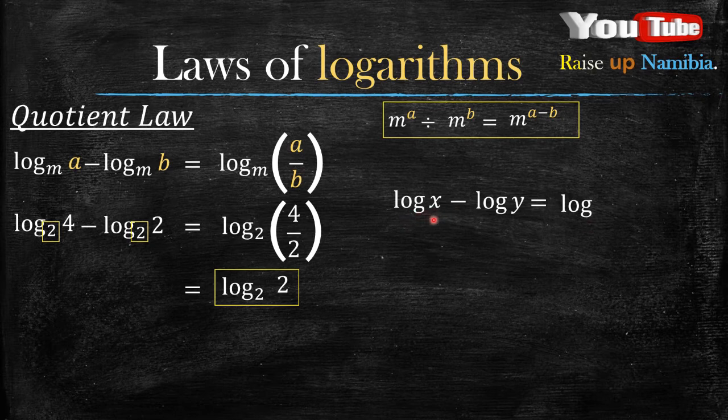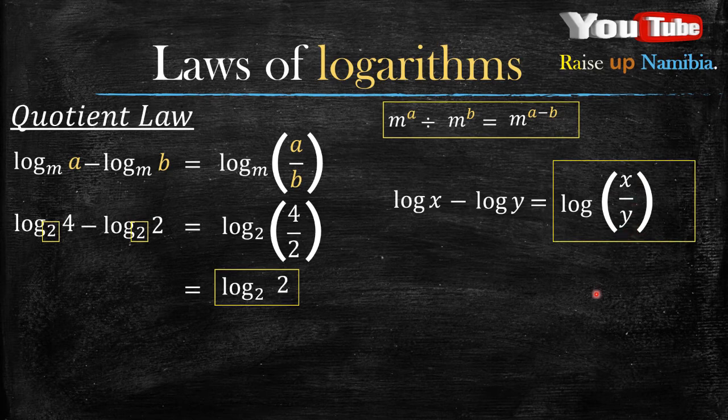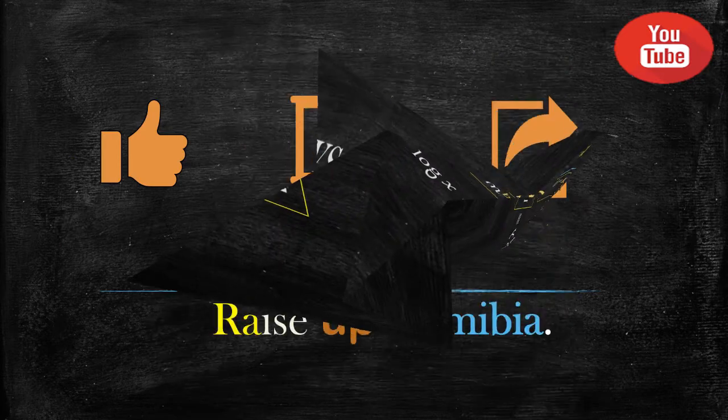They will know that the base is 10. So because our base here is 10, or we didn't write anything, in our answer part we can also just write it as log without a base. And then we divide whatever is at a, which is x, and whatever is at b, which is y. So if we divide x by y, we get this answer, and that's our final answer.